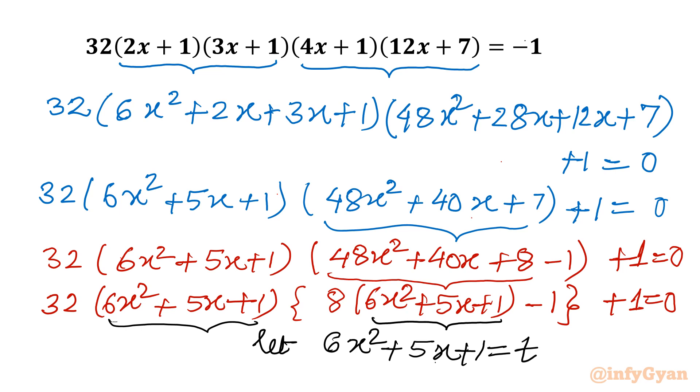Now this equation will become 32 times t in bracket (8t minus 1) plus 1 equal to 0. Let me write here: 32 times t in bracket (8t minus 1) plus 1 equal to 0.